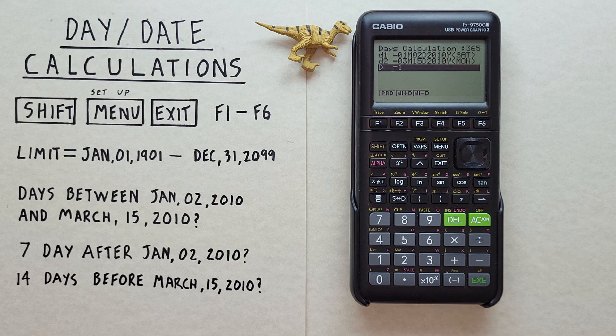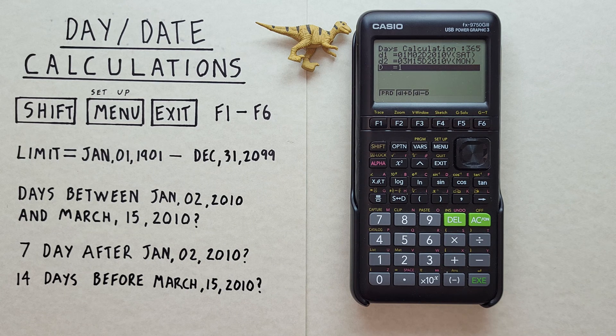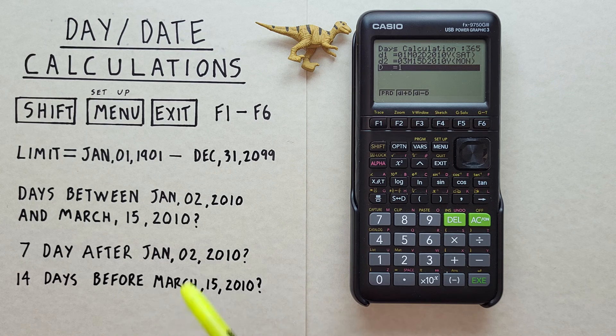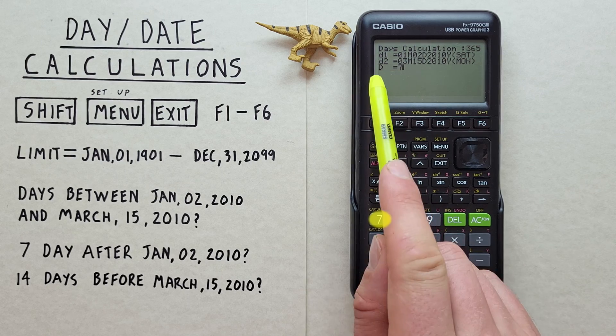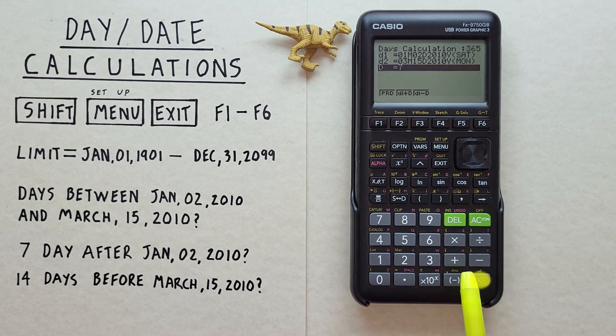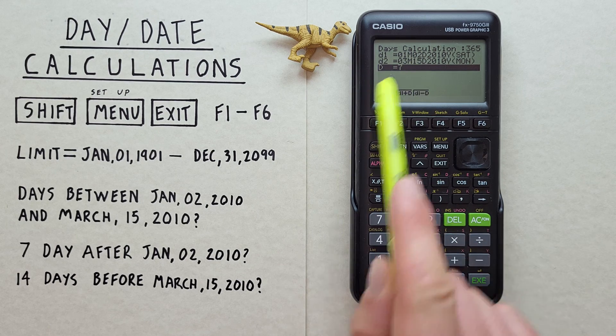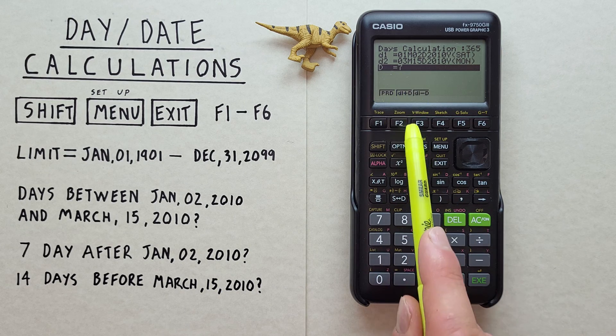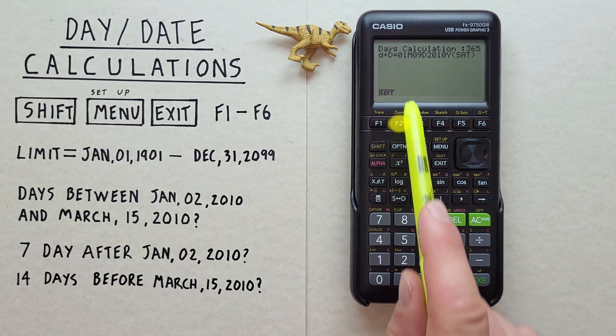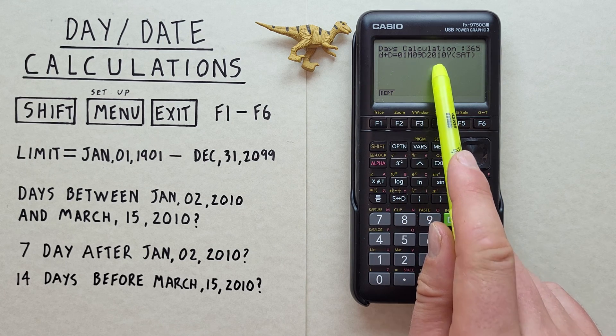Let's say we set ourselves a milestone for our project seven days after the start of our project on January 2. And we want to know what that date is. Well, we can do that with this app as well. We set D to seven. D is the number of days. And then we hit D1 plus D or date one, which remember was January 2 2010 plus seven days. That tells us that is January 9 2010, which is also a Saturday.